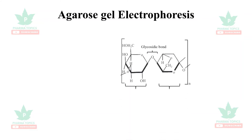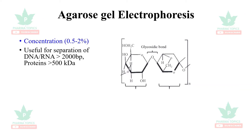In agarose gel electrophoresis, the gel contains agarose at a concentration of 0.5 to 2 percent. It is useful for separation of DNA and RNA greater than 2000 base pairs and proteins greater than 500 kilodaltons.